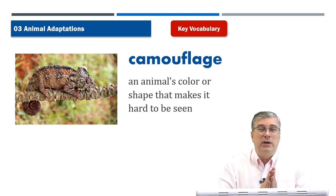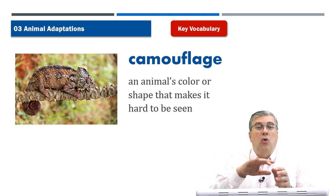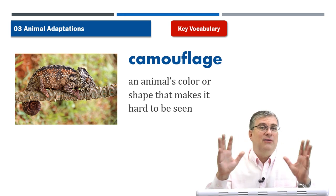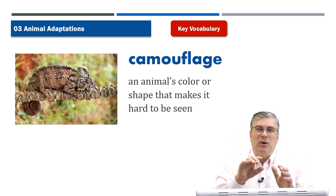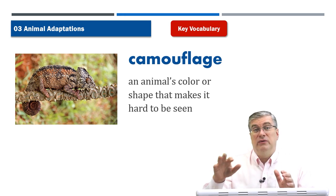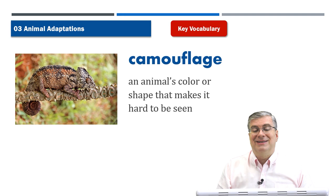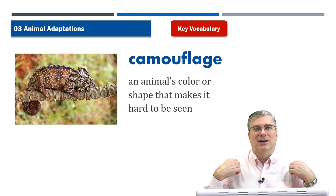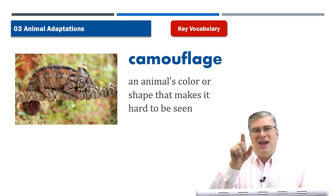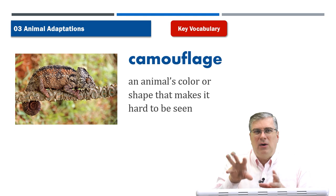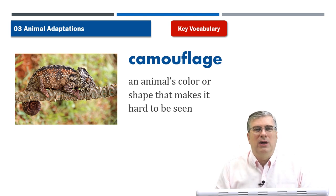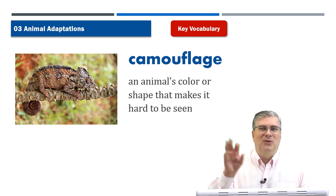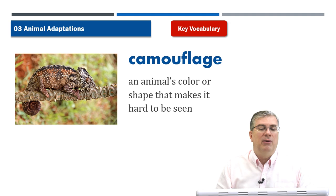Frogs can do this too, and so can an octopus — the coral reef has many different colors and the octopus changes so it matches those colors as it moves over the reef. So that is camouflage. Sometimes people will wear camouflage — a jacket or pants with a black and green pattern. If they go in the forest, it would be hard to see them because of those colors.